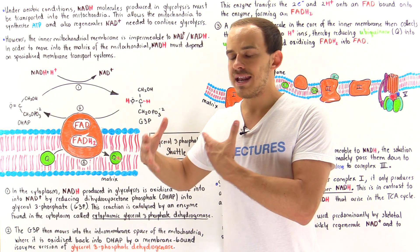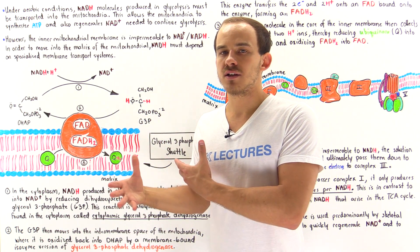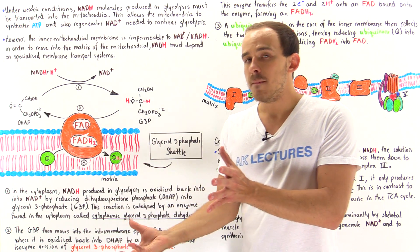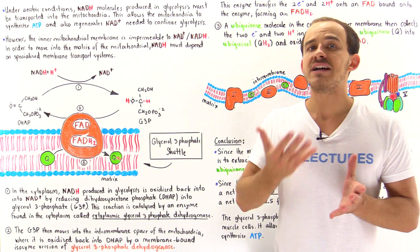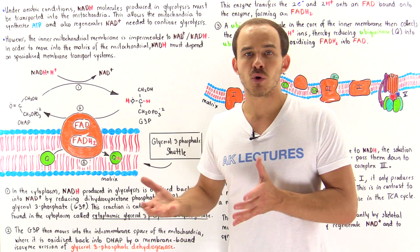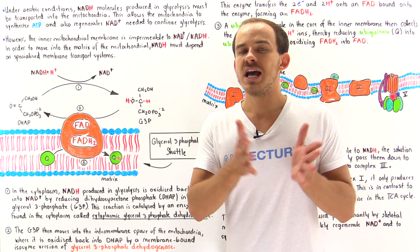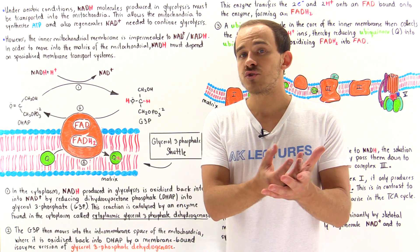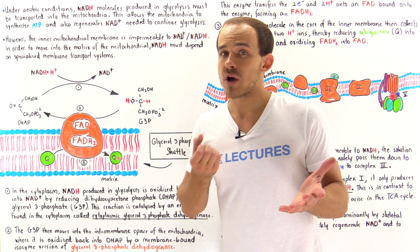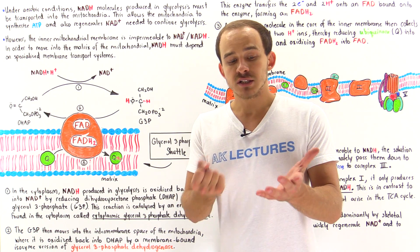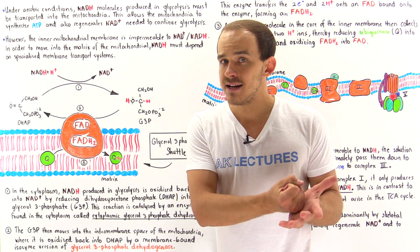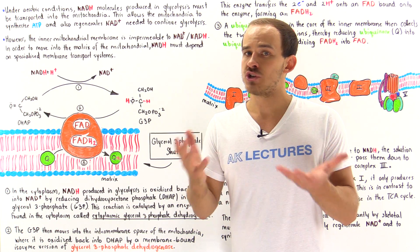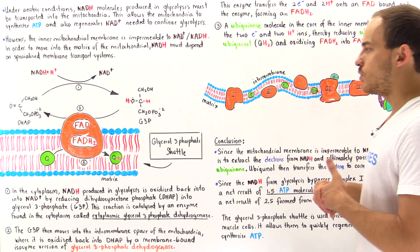The NADH molecules formed in glycolysis must somehow move onto the electron transport chain found on the inner membrane of the mitochondria. There, the electrons are extracted from the NADH to form NAD+, and the electrons are also used to actually generate ATP molecules.